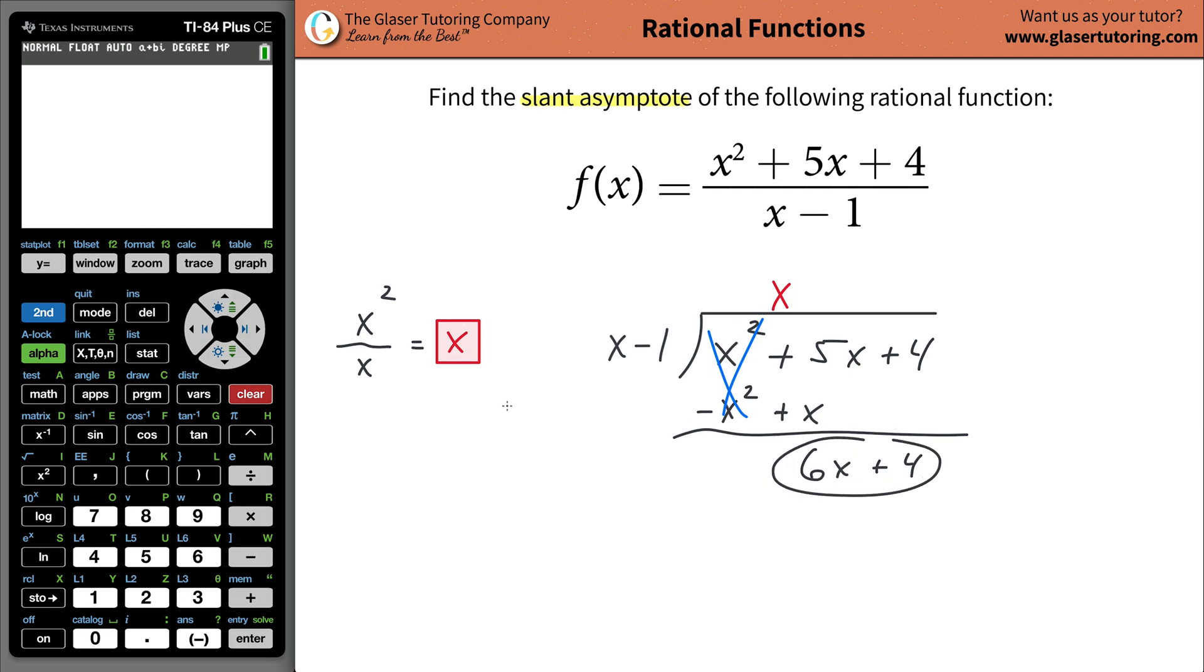What you're going to do, repeat the process. Take the highest power of x here, 6x, and divide by the highest power of x there, which is just x, along with its coefficient. Now when you do this, it's just going to be a value of 6. And you plug that in, positive 6.